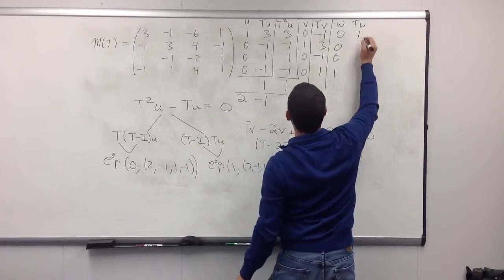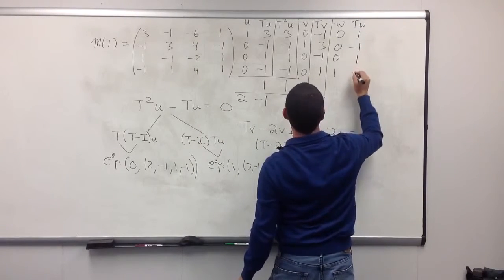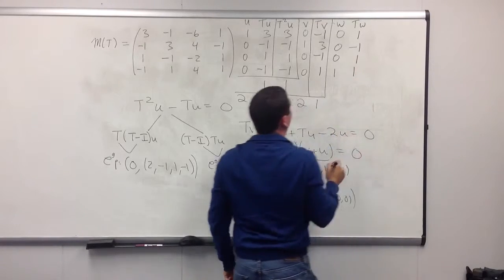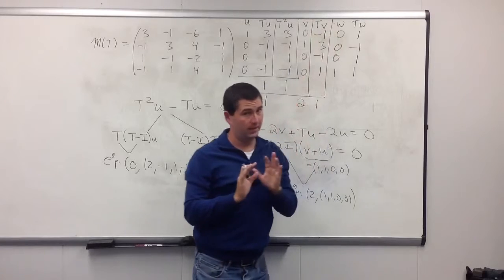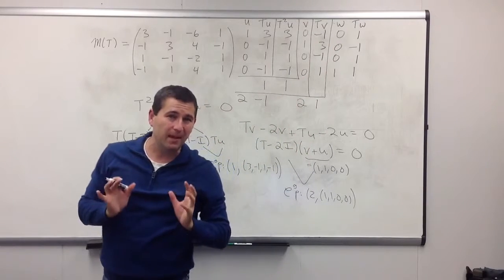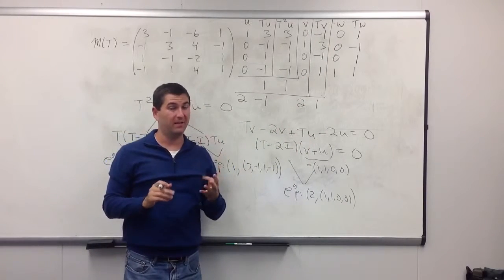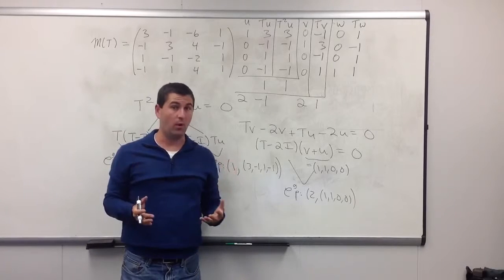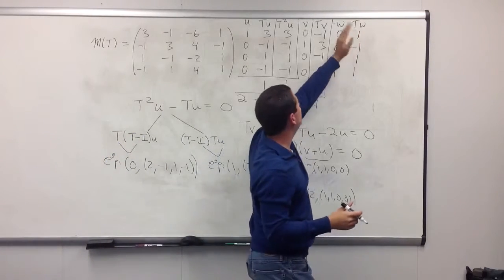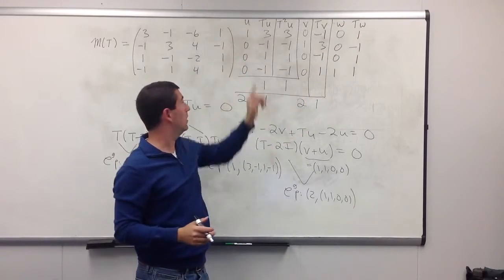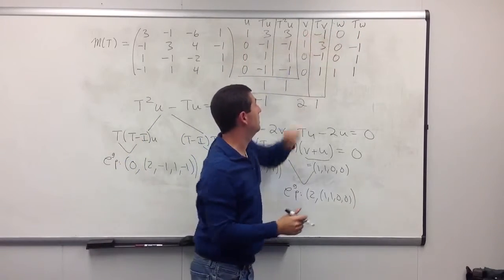So, let me apply T. That gives me the fourth column, 1, minus 1, 1, 1. Now, we know that u, Tu, v, and w is already a linearly independent list with 4 elements, and the vector space is dimension 4. So, we already have a basis, which means that Tw is going to have to be a linear combination of u, Tu, v, and w.